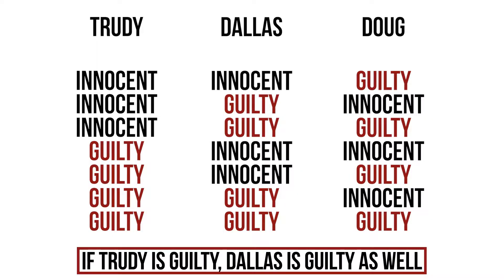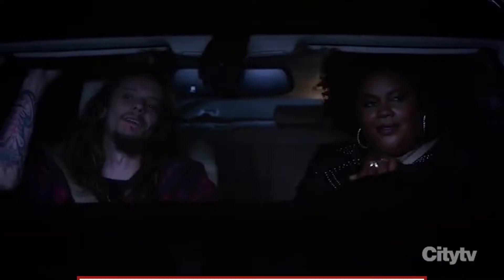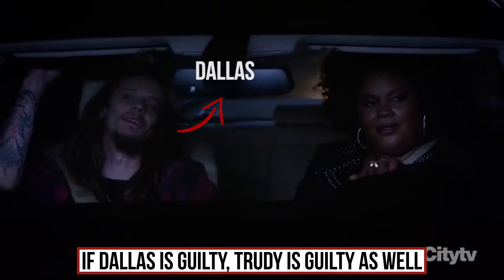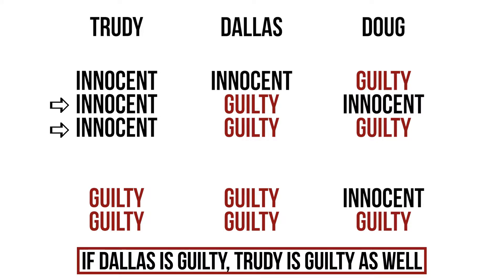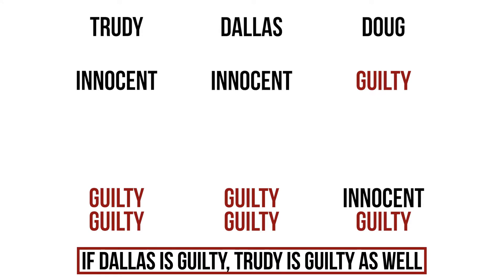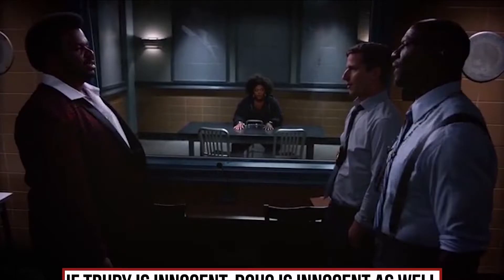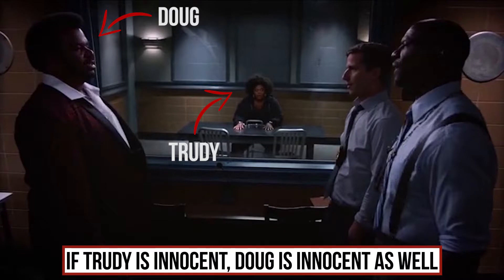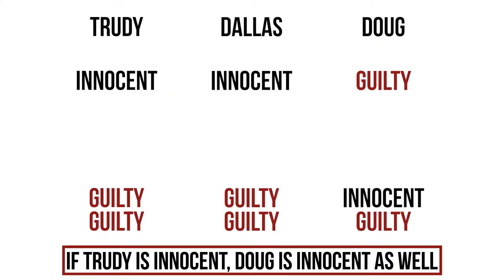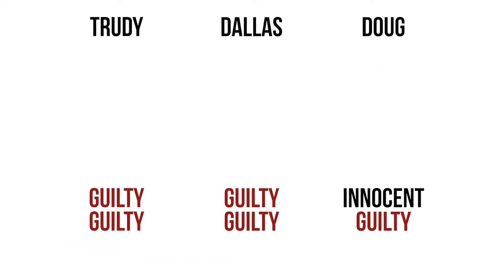So we eliminate all possibilities in which Trudy is guilty but Dallas is not. We also know that the same goes the other way around: if Dallas is guilty then Trudy is guilty as well. So we eliminate all possibilities in which Dallas is guilty but Trudy is innocent. Finally, we also know that if Trudy is innocent then Doug is also innocent, so we eliminate all possibilities in which Trudy is innocent but Doug is guilty.